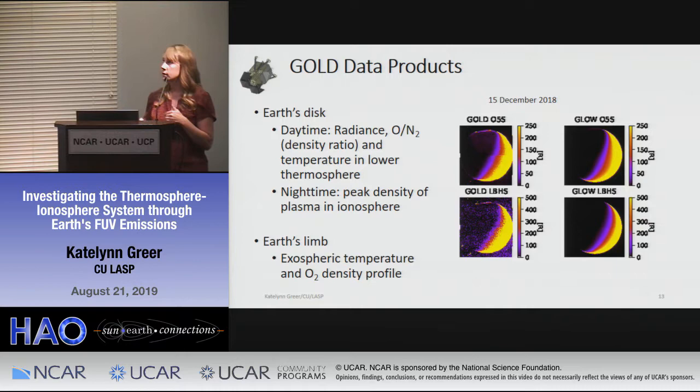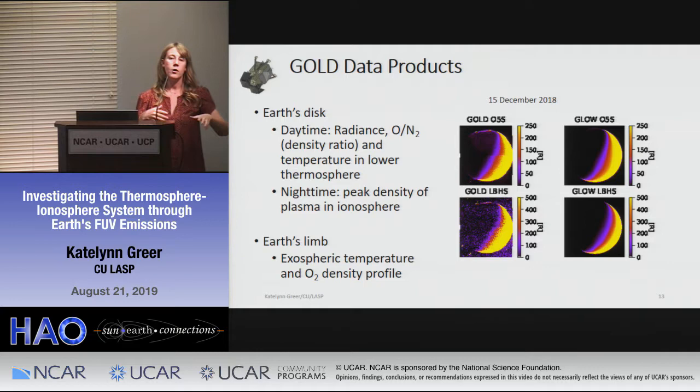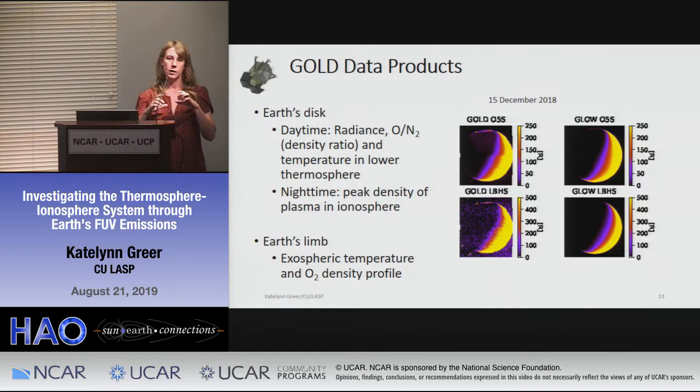You'll also notice some noise in the GOLD images. At geostationary orbit, all kinds of radiation comes in, and during a geomagnetic storm some images look like they have snow in them — that's due to the radiation the detector experiences.